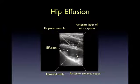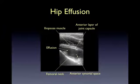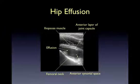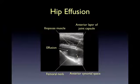This image shows an abnormal hip in a seven-year-old child. Let's review the labeled structures starting with the word 'effusion' at the left-hand side of the image and proceeding clockwise. A very obvious hypoechoic effusion is present. At top left, the iliopsoas muscle is labeled. Just beneath the iliopsoas muscle, the anterior layer of the joint capsule is seen — this structure is easier to identify in the presence of an effusion. At the bottom right, the anterior synovial space is labeled. At the bottom left, the hyperechoic femoral neck is labeled. The femoral head and growth plate are not seen in this image as they are out of view at screen left.